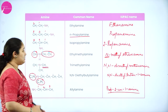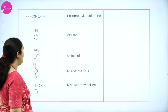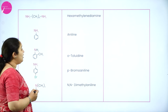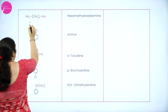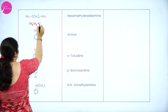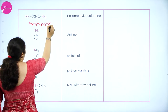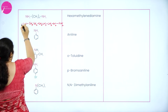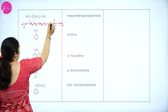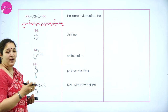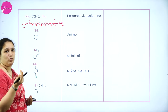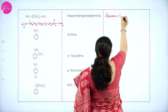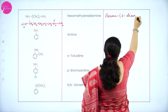We have some more examples. You can see there are 6 CH2 groups and 2 NH2 groups — one NH2 at each end, on the 1st and 6th carbon atoms. So the IUPAC name is hexane-1,6-diamine, since there are two amine groups.